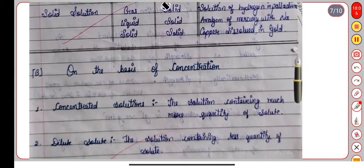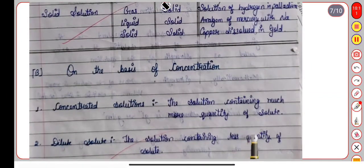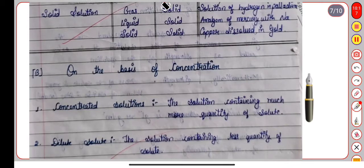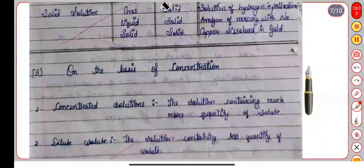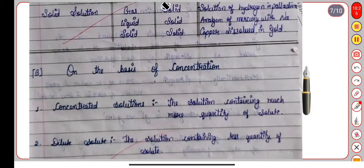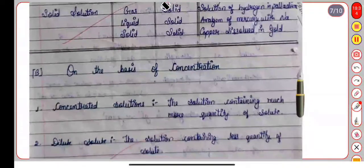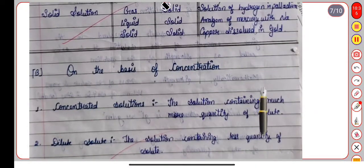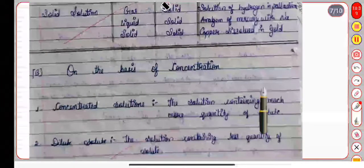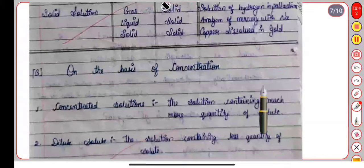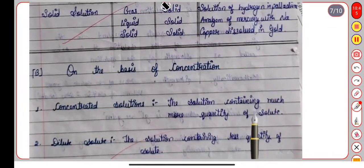On the basis of concentration, there are two types: concentrated and dilute. A concentrated solution contains a much larger quantity of solute. For example, water and salt — if we add a lot of salt, then we have a large quantity of solute, which is called a concentrated solution.